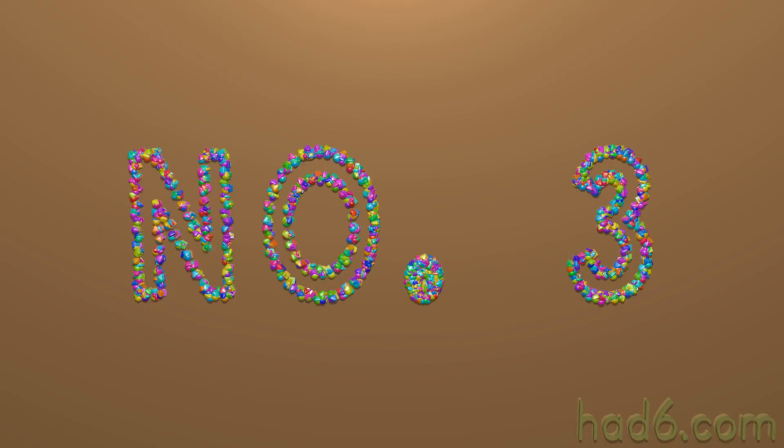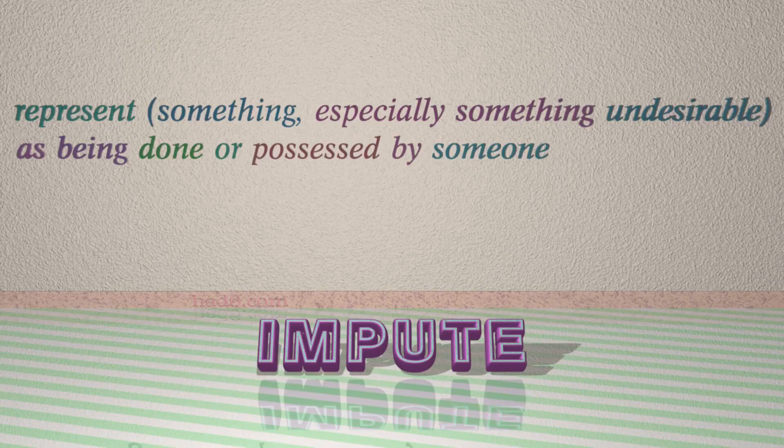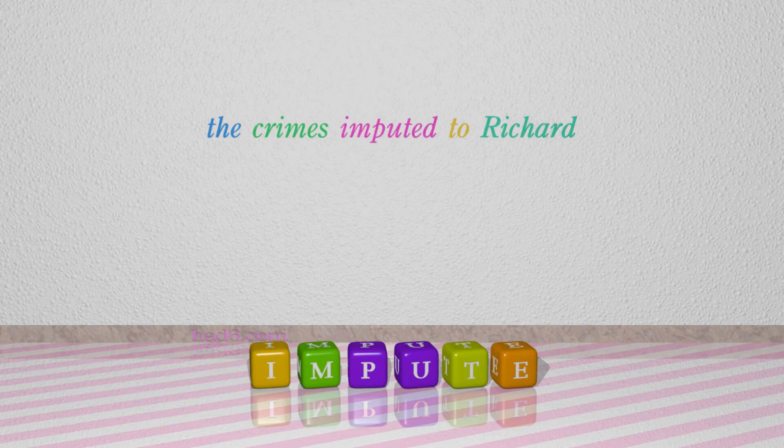Number 3: Impute. Which means: represent something, especially something undesirable, as being done or possessed by someone. For example, the crimes imputed to Richard.